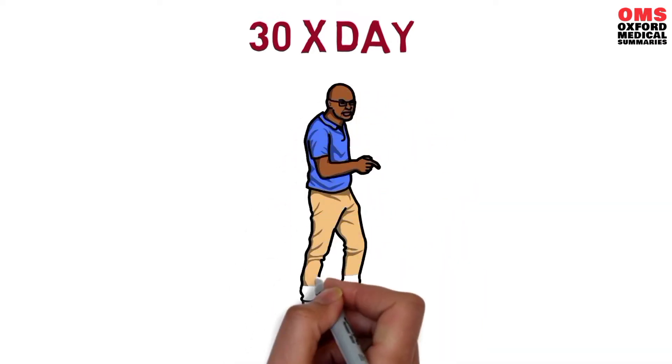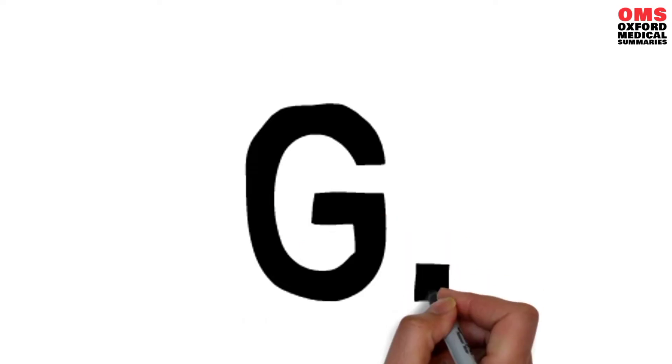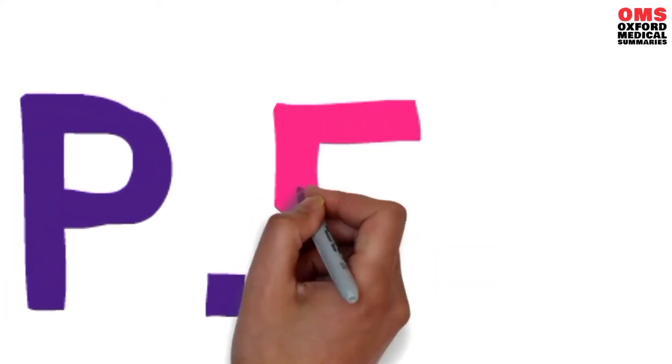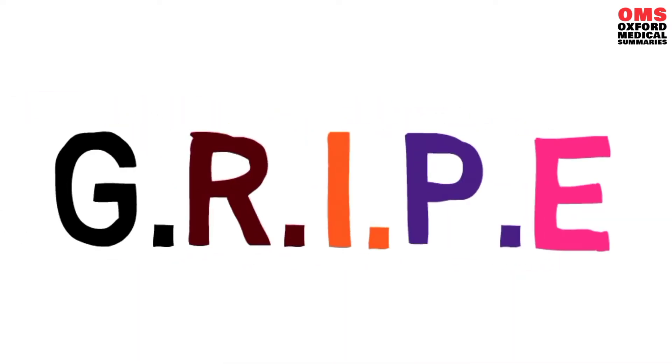People complain for 5 main reasons and these can be put together in the acronym GRIPE: Get attention, Remove responsibility, Inspire envy, Power, and Excuse poor performance. Let's look at each one of these in a little bit more detail.